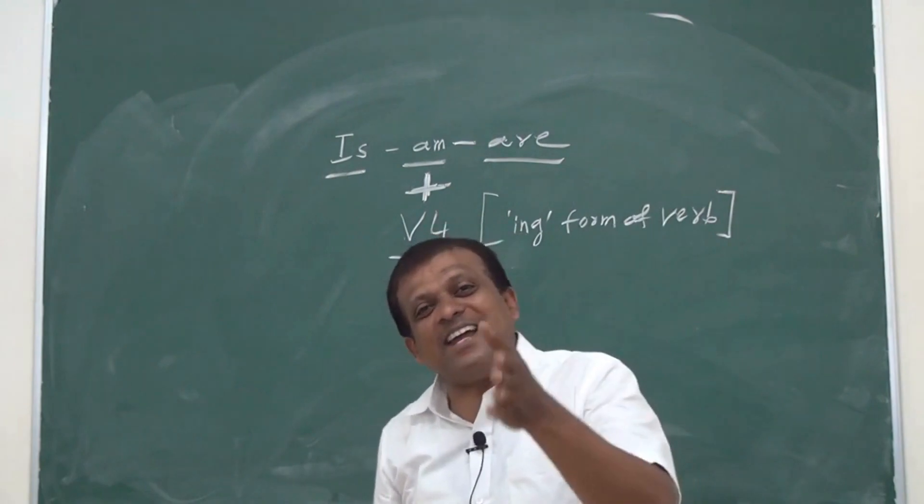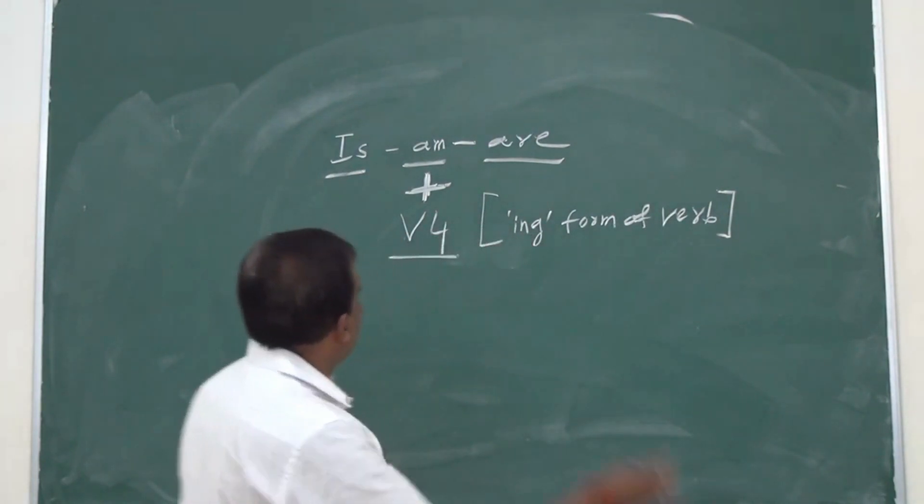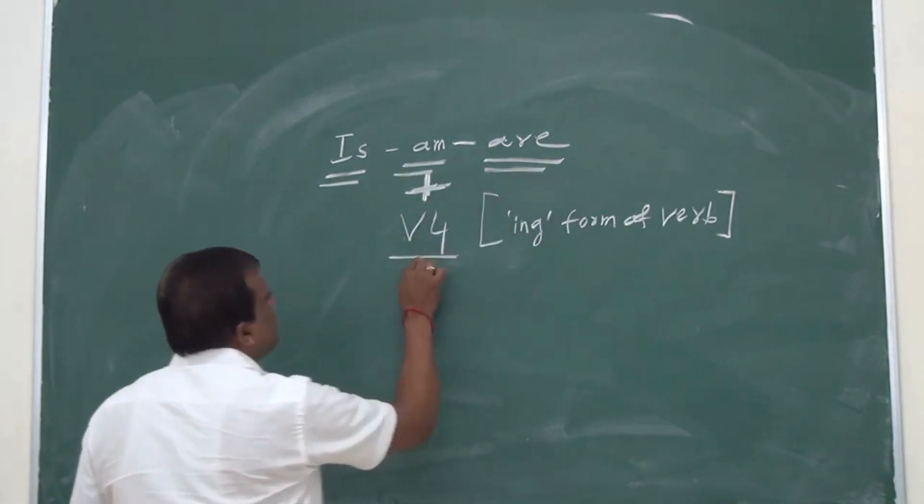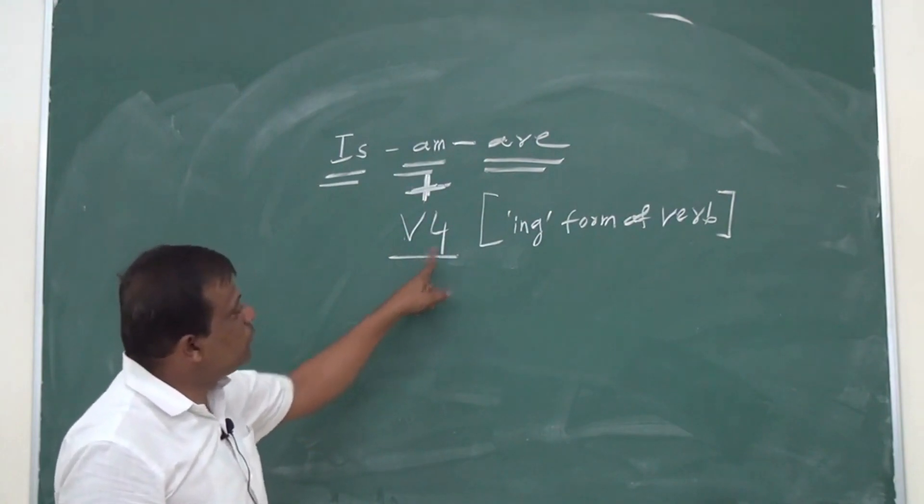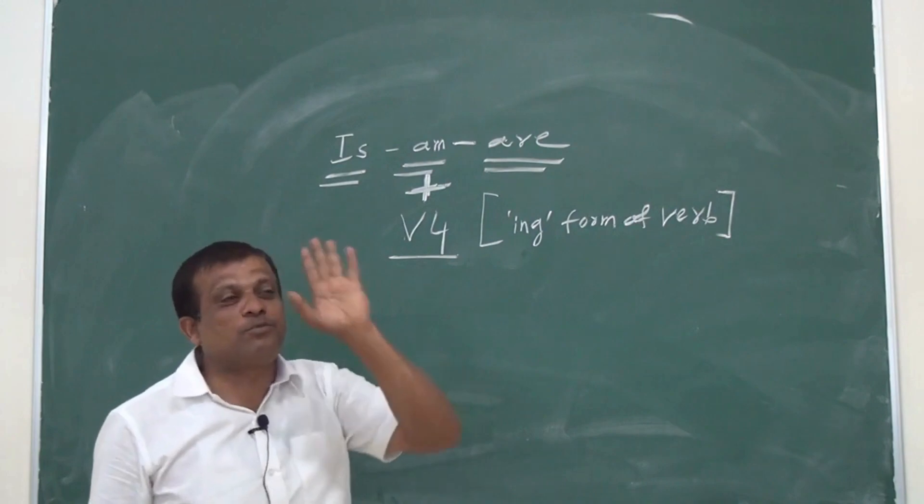Then what is right? If you want these sentences to be correct, add 'is,' 'am,' or 'are' with verb number four. What is verb number four? Any word which takes 'ing' is verb number four.